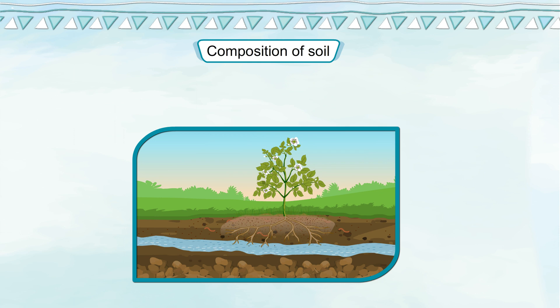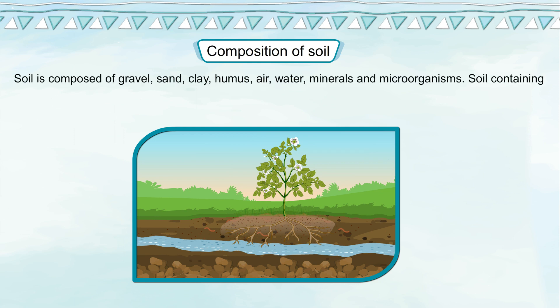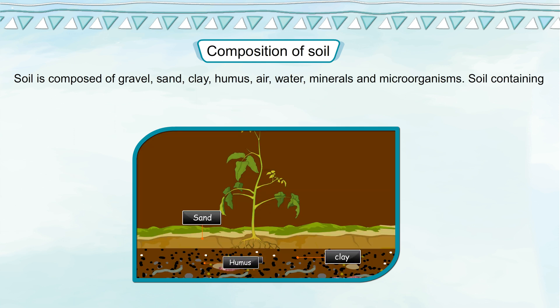Composition of Soil. Soil is composed of gravel, sand, clay, humus, air, water, minerals and microorganisms.